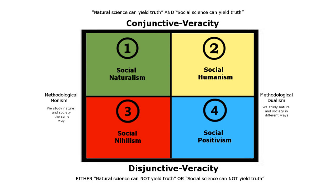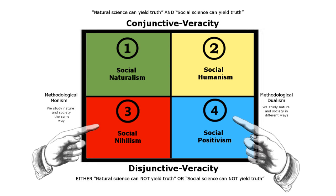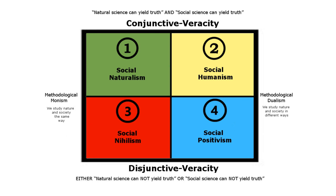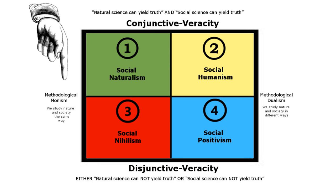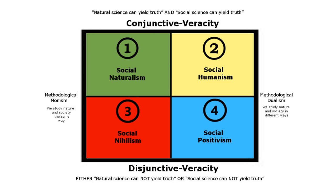Disjunctive veracity on the other hand means that either the study of society or the study of nature cannot yield truth — that at least one of these disciplines is incapable of achieving the status of science. Which is why options three and four at the bottom, social nihilism and social positivism, are pessimistic about the possibility of there being social and natural truths together, although not apart. The horizontal axis runs between what I've called methodological monism on the left and methodological dualism on the right.